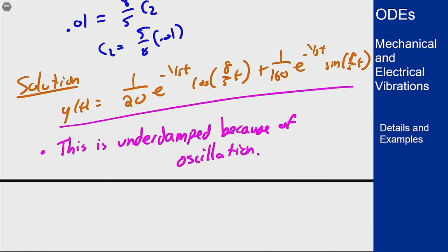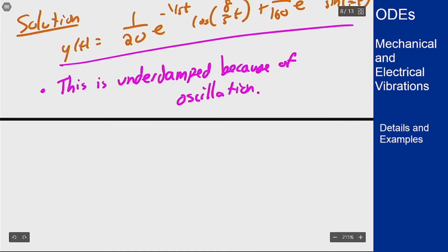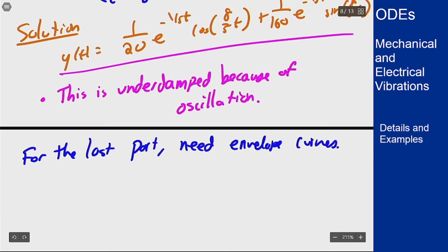And then finally we want to figure out when this object is within 0.001 of the original position. How can we do it? We first have to combine this into a single trig function to get the amplitude to find the envelope curves for this.